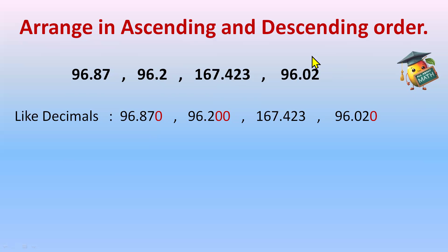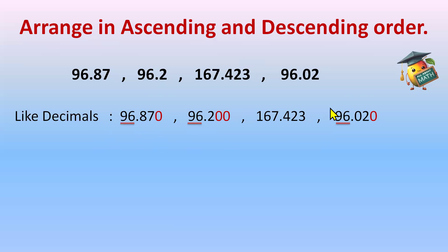After converting to like decimals, let's start comparing. For ascending order, we write the smallest first. Comparing the whole parts: we have 96, 96, 167, and 96. Since 167 is the greatest, we set it aside. Among the three 96s, the whole parts are the same, so we move to the tenth place: 8, 2, and 0. The smallest tenth place digit is 0, so 96.020 is the smallest.